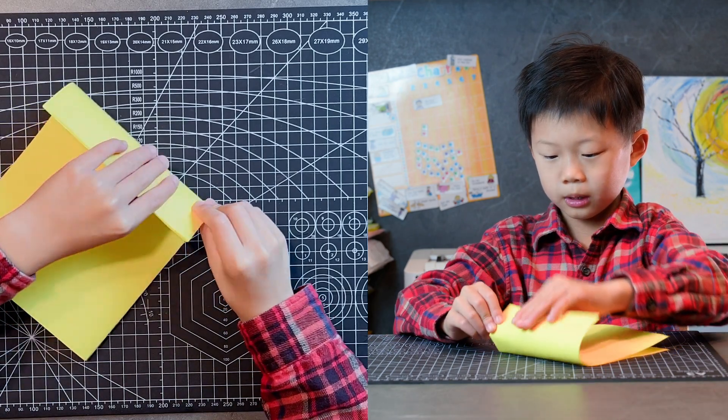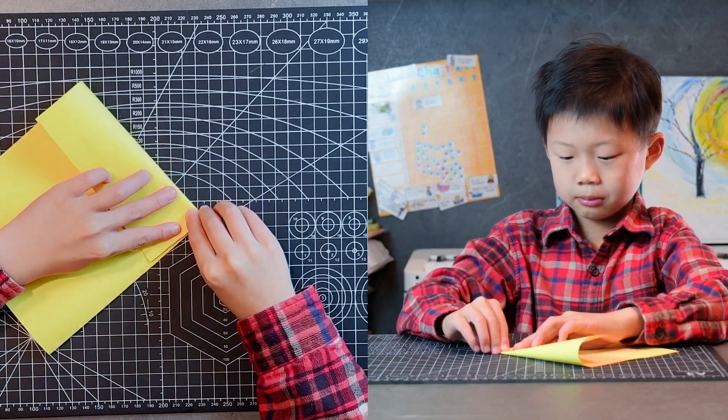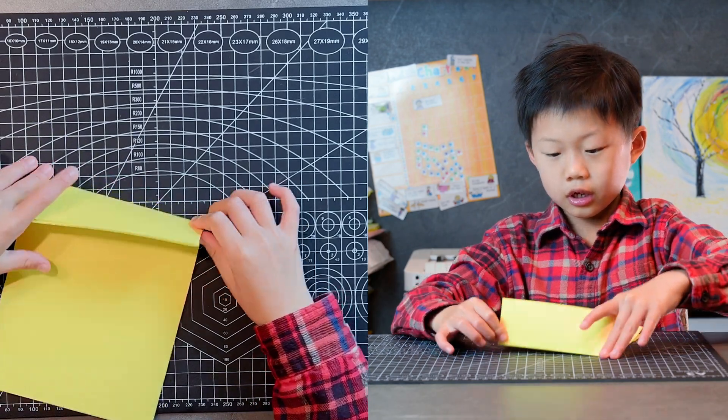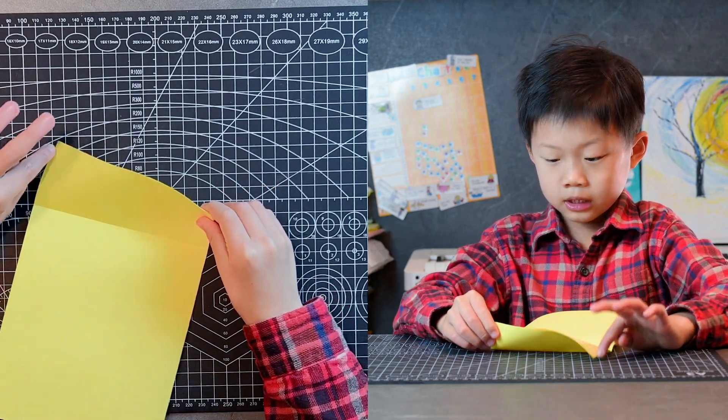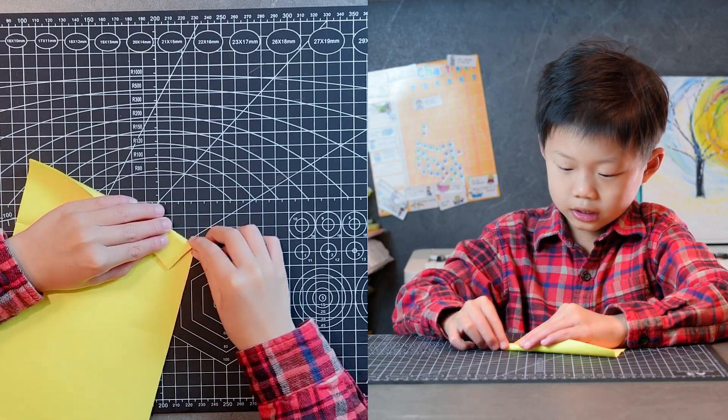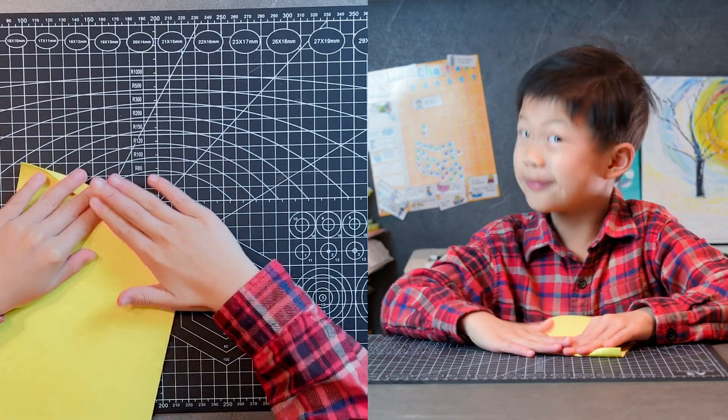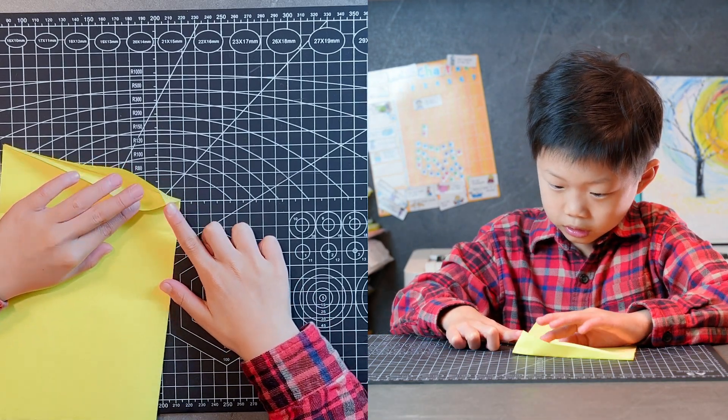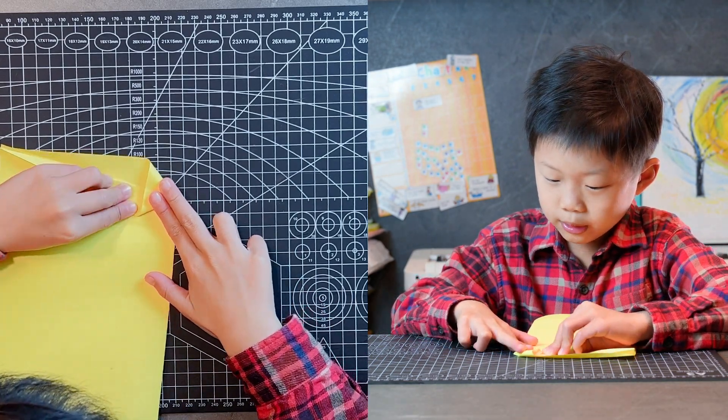And then fold your top edge to the pinch crease you just made and this time do crease all the way across. And then make a crease around this point so that corner lands on that crease. And then squash fold that loop of paper.